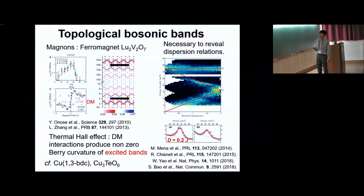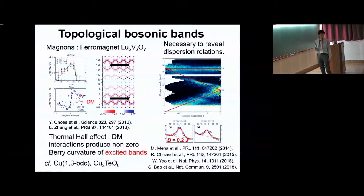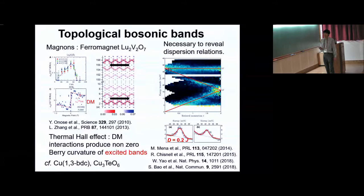After the discovery of the quantum Hall effect and topological insulators, further investigation of these topologies has been performed. The concepts of edge states are not only for fermionic systems but have also been extended to bosonic systems, such as photonic crystals, phonons, and magnets. For example, the thermal Hall effect was first discovered in the ferromagnetic insulator lutetium-2 VO7, and its origin was explained by DM interactions, which induce complex hopping amplitudes.